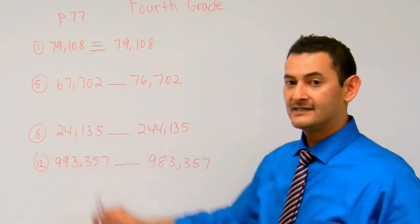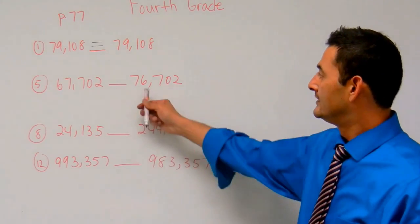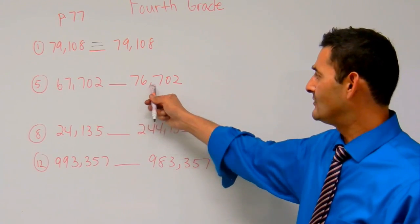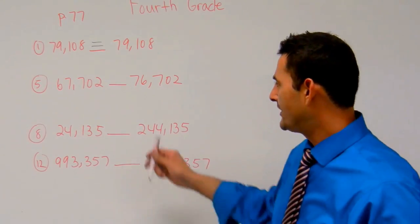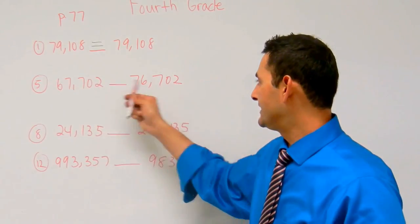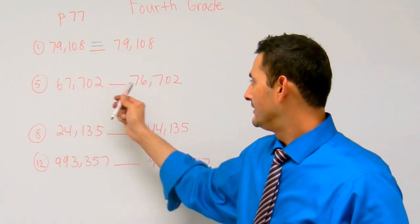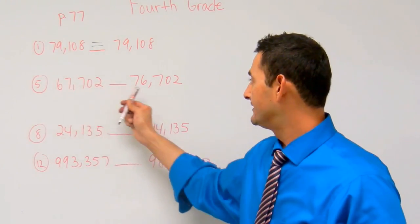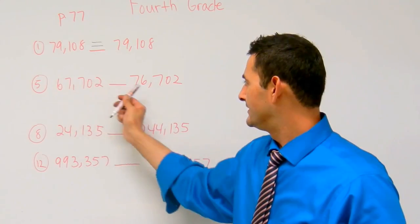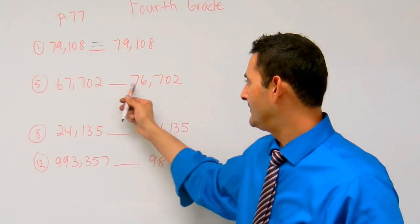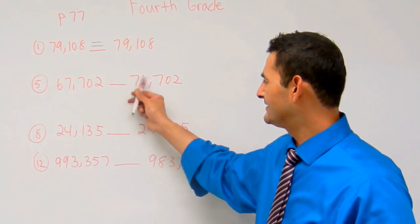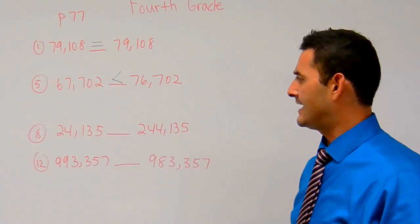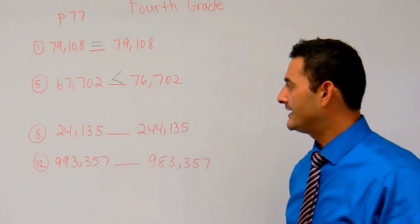Now we've got 67,702 and then 76,702. Well, what's going on there? Here I've got the exact same numbers, and here this number is bigger, but then here this number is smaller than the 10,000. So 67,000 is less than 76,000. Now let's take a look at number 8.